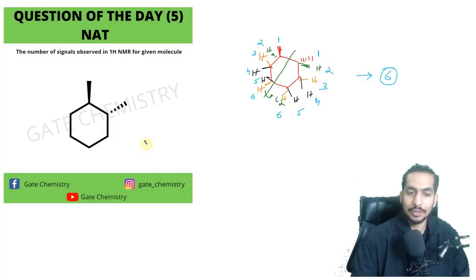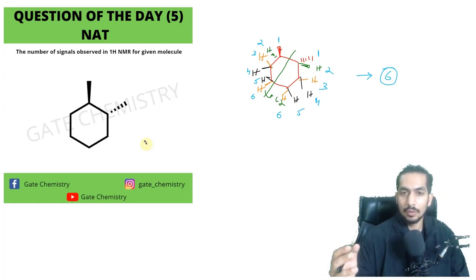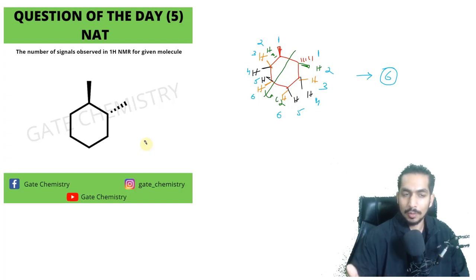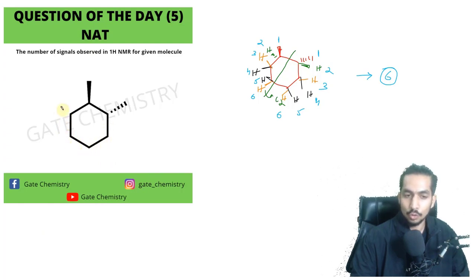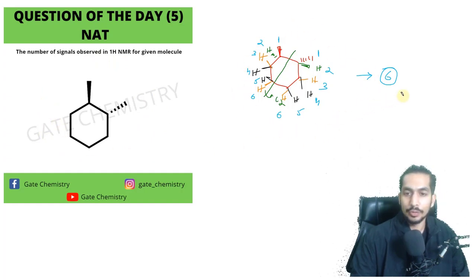Overall, the number of signals observed for this planar structure is six. Under the chair conformation we have to consider many factors — for example, if ring flipping takes place, how much of the molecule exists in the diequatorial conformation versus the diaxial conformation. Depending on that, the number of signals can vary, and there is no consensus or reference that states these are the exact signals observed. The chemical shift values of these protons are very close to one another, making it very difficult to say exactly how many signals will be observed. So I reframe the question to the planar structure, and from a theoretical point of view the answer is six signals.